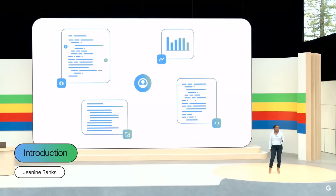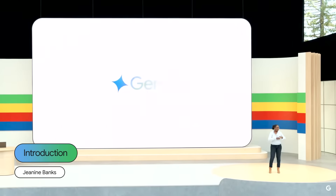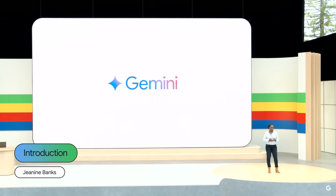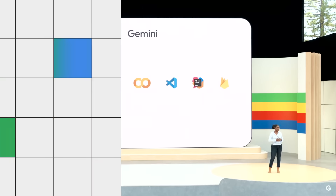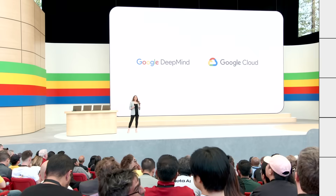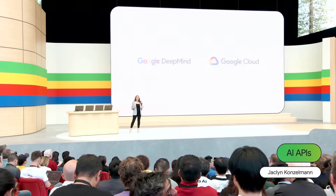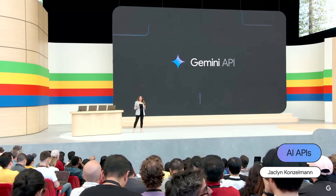That's why Gemini is available to all developers to use in Android Studio, Chrome DevTools, Project IDX, CoLab, VS Code, IntelliJ, and Firebase. We make it easy to start building an AI app with a simple API integration, so you can focus on building the best possible products for your users.